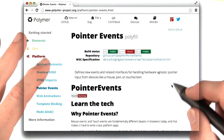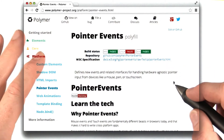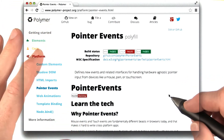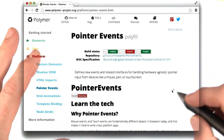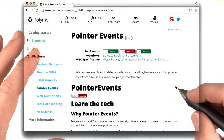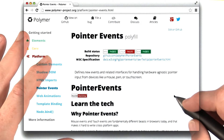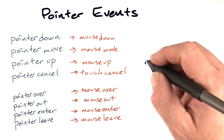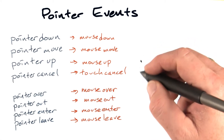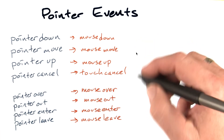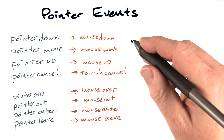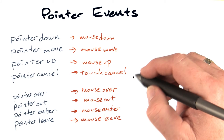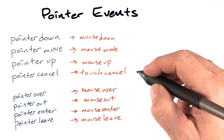Luckily, there's a great polyfill library out there as part of the Polymer project. This is what I use to implement pointer event handling in my synthesizer. The set of pointer events should look pretty familiar to you if you've used mouse events before. They basically map all the mouse events directly and then add the pointer cancel event from touch as well.